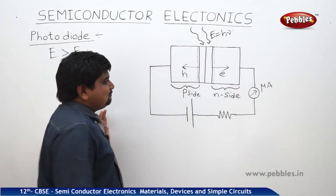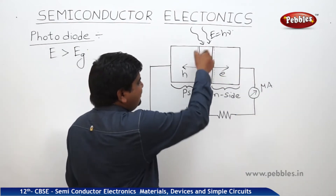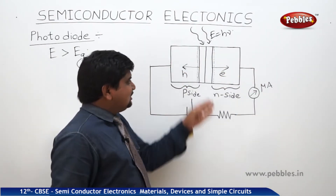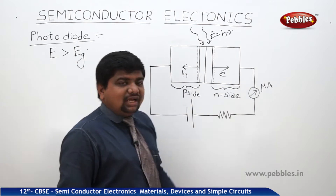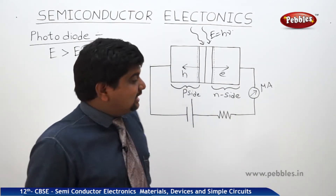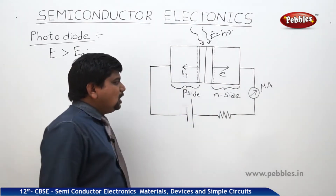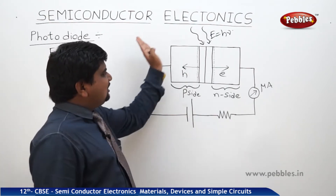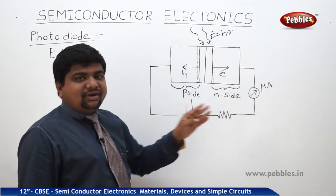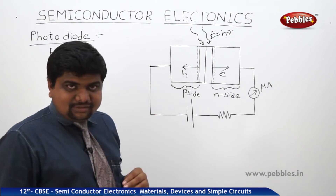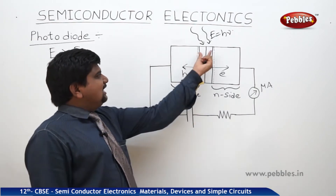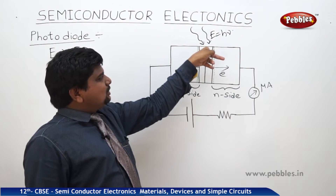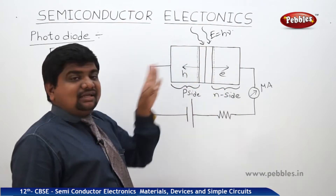The recombination takes place at the depletion region. Before the recombination, the carriers transfer to their native regions — that is, the electrons to the N side and holes to the P side. This is how the photodiode is fabricated. There is a slight gap which allows the incident light through to the depletion region.